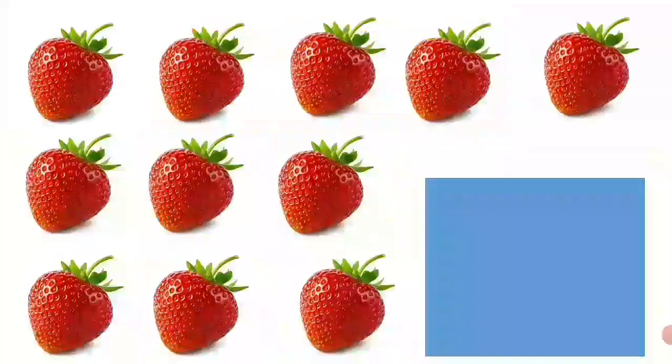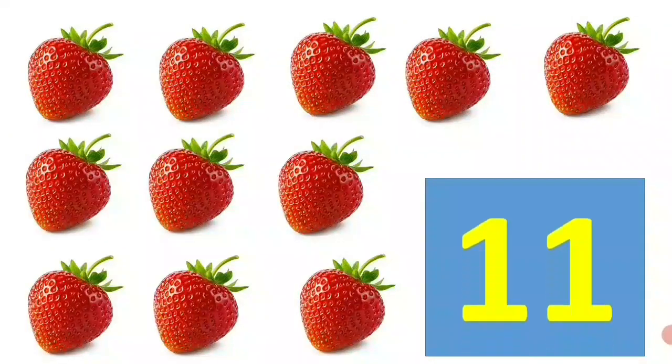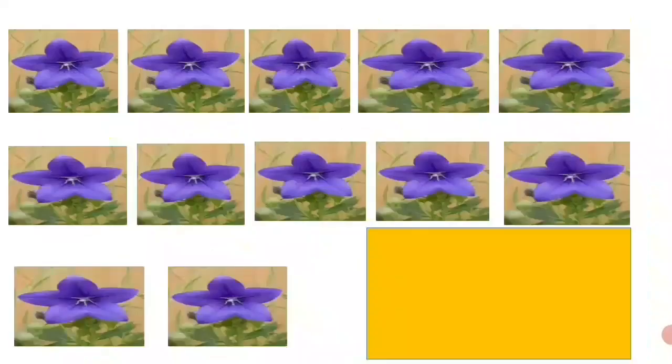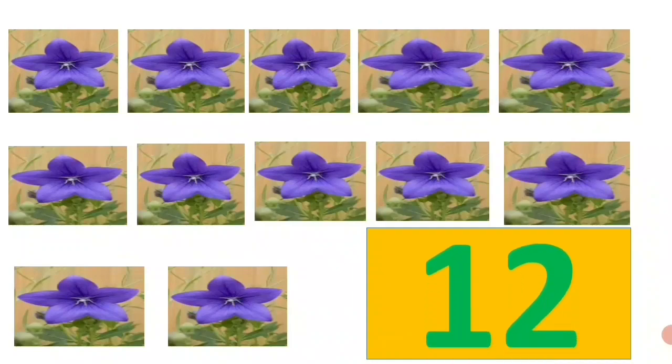Children, what are these? These are strawberries. How many strawberries are there? There are 11 strawberries. What are these? These are flowers. How many flowers are there? There are 12 flowers.